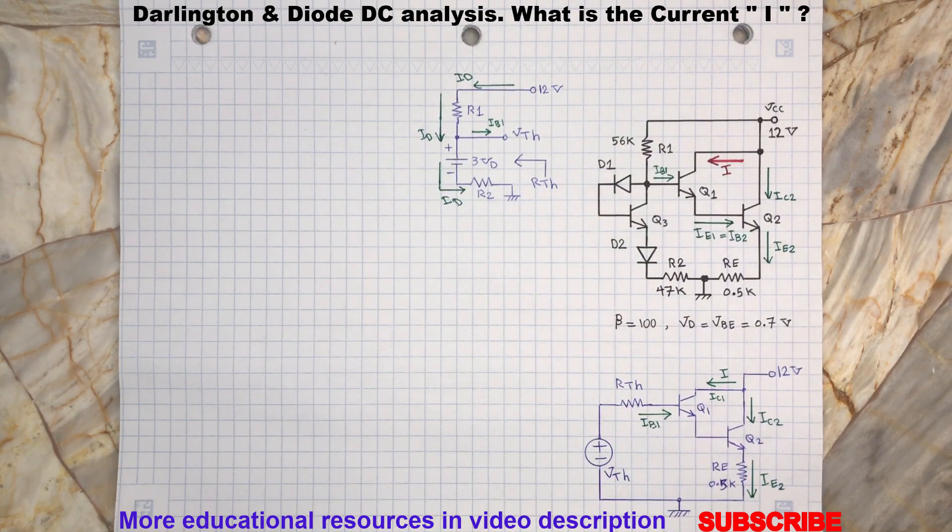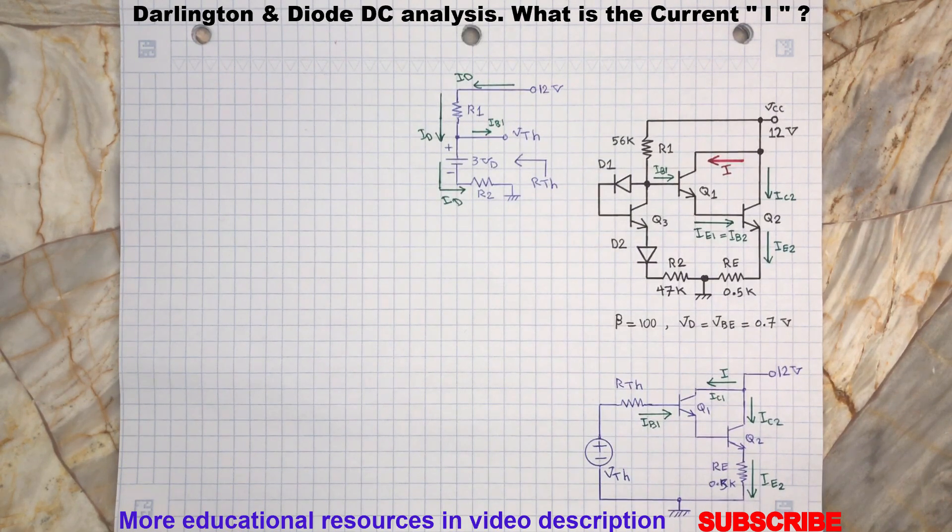The Thevenin equivalent will consist of a voltage equivalent Vth and a resistance equivalent Rth. For the resistance equivalent Rth, we short circuit all the voltage sources seen from the point we would like to find the Thevenin equivalent. In this case, both Vcc and 3Vd will be shorted, and here is what we will see.